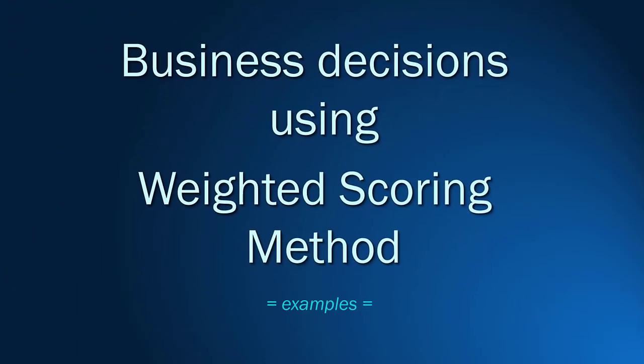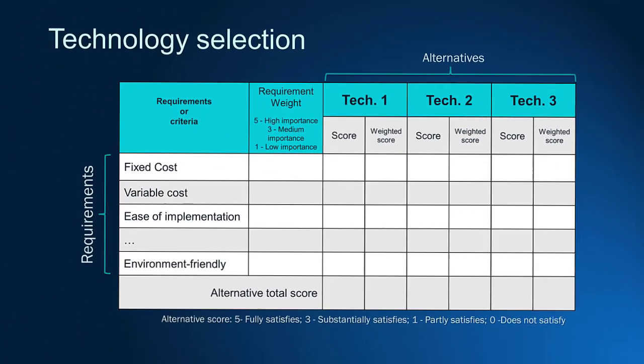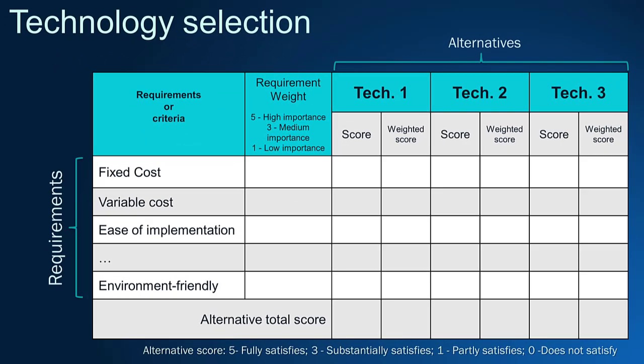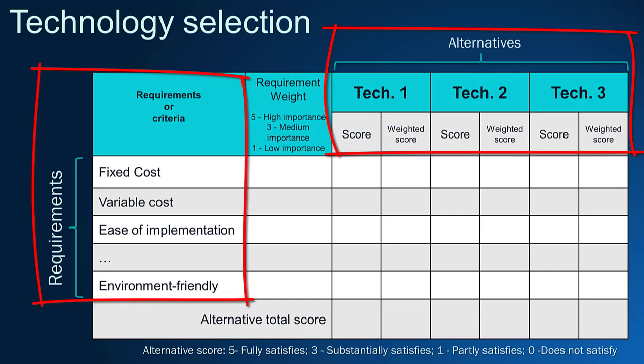Let's check now some practical business applications. This example shows how to select a technology. You can see technological alternatives in the columns and business requirements in the rows.